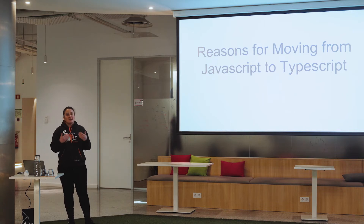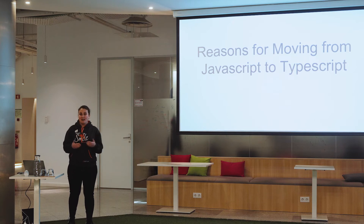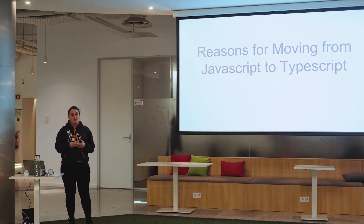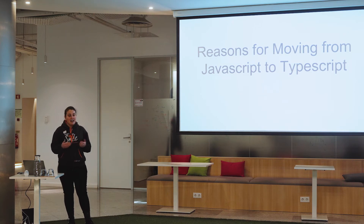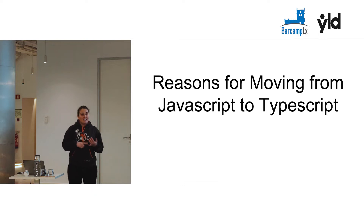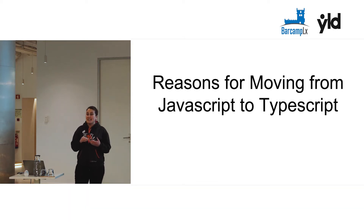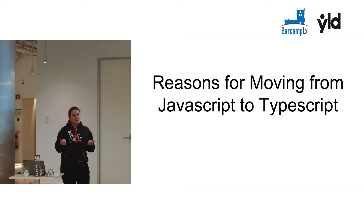Since GraphQL is a strongly typed query language for APIs, in our API all the types that we have — queries, mutations, inputs — they are also all strongly typed.